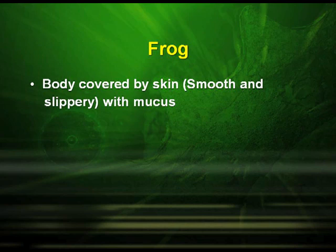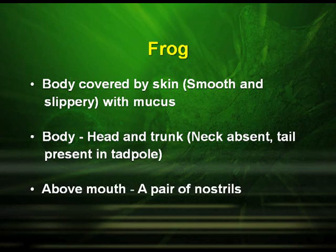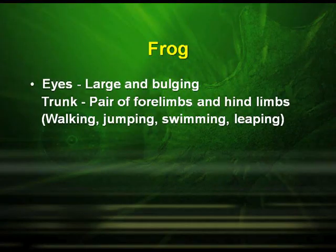We will move on to the next organism — frog, which comes under Amphibia. The body is covered by skin which is smooth and slippery, with mucus on the skin. The body is divided into head and trunk. The neck is absent and a tail is present in the tadpole stage. Above the mouth they have a pair of nostrils, and the eyes are large and bulging. The trunk has a pair of fore limbs and hind limbs, which are meant for walking, jumping, swimming and leaping.